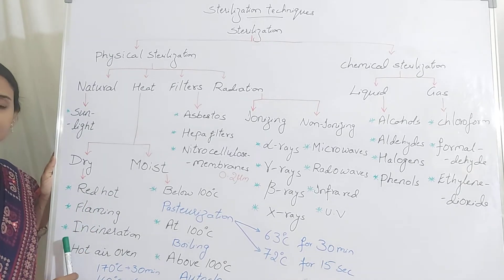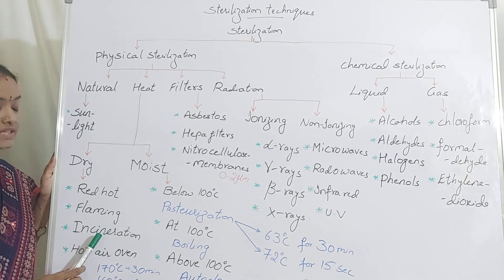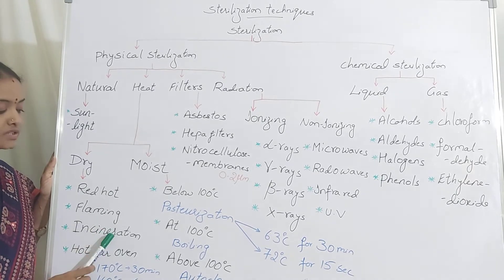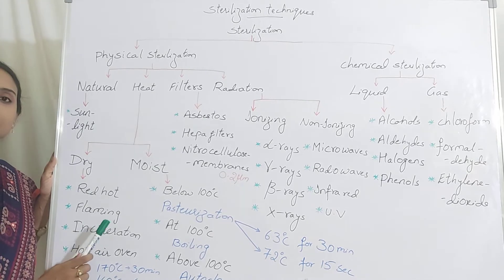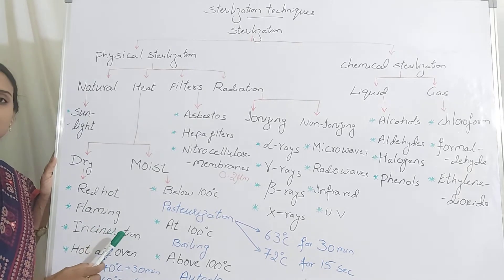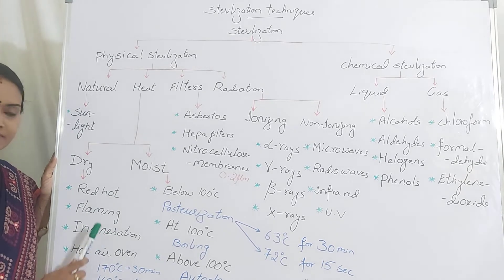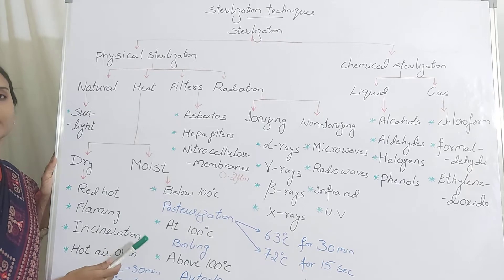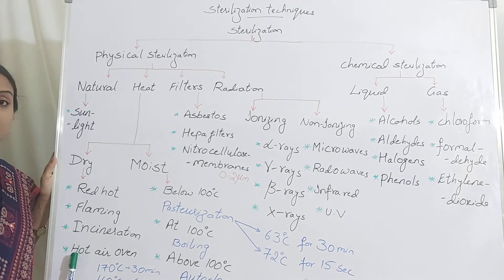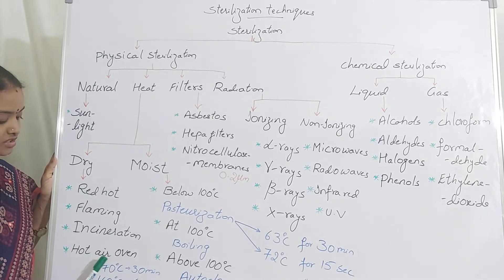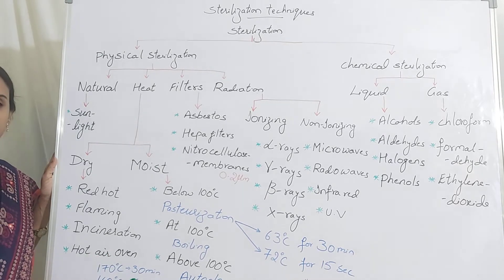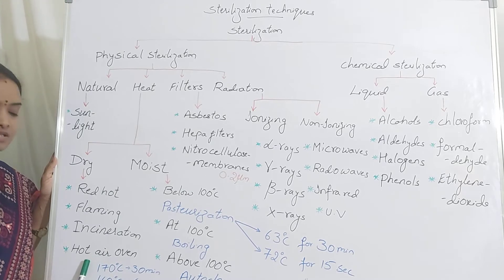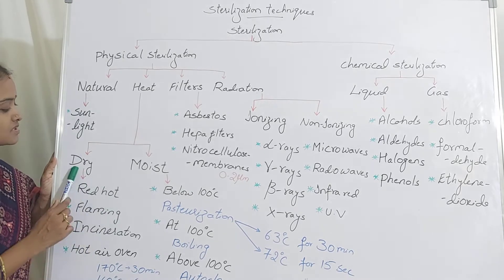Next is the incineration process. In incineration, after animal biotechnology practicals, you discard contaminated or used media by burning. Incineration is a process of burning the substance into ashes. The last dry heat method uses a hot air oven, where the temperature is maintained at 170°C for 30 minutes or 160°C for 60 minutes — as time increases, temperature decreases.